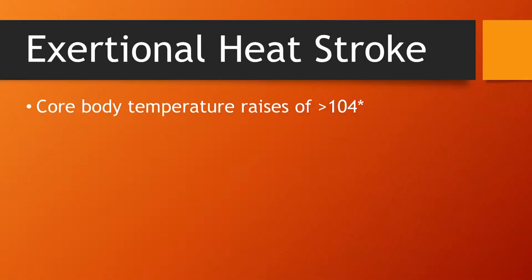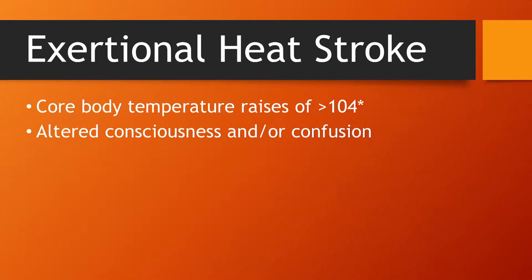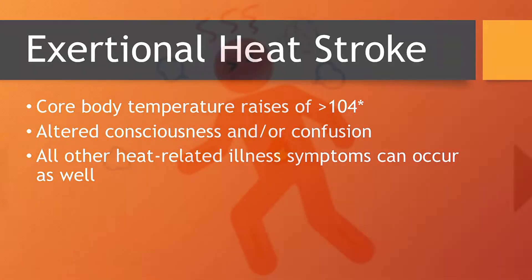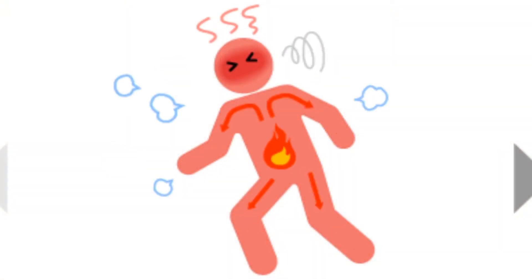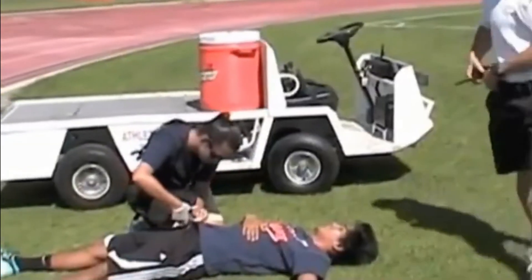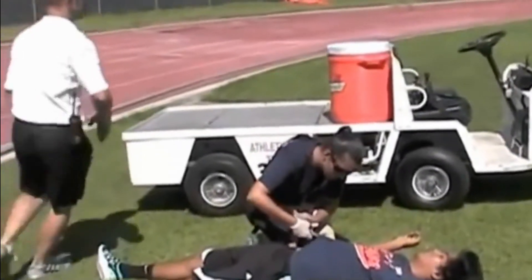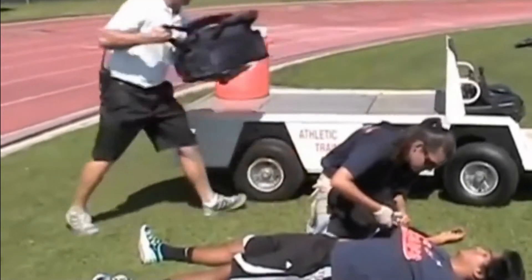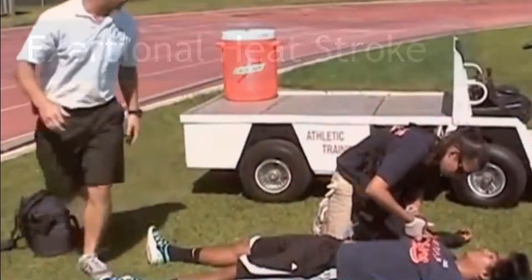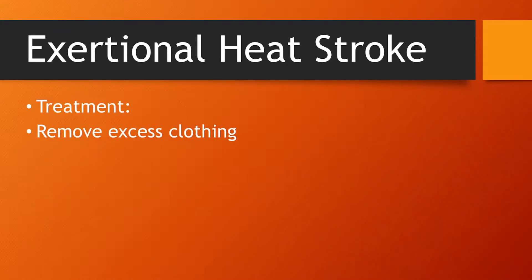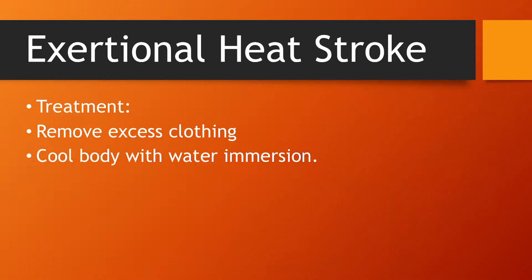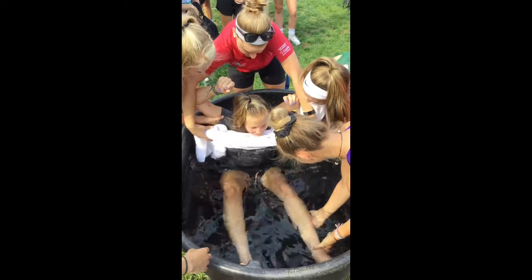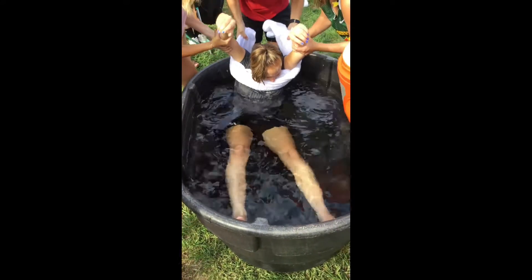Exertional heat stroke can be fatal if not treated quickly and properly. It occurs when the body's internal temperature rises to a point where the body can no longer effectively cool itself, leading to organ shutdown and eventually death. The two main criteria for diagnosing exertional heat stroke are rectal temperature above 104 degrees and central nervous system dysfunction. Immediately remove the person from the field and remove all equipment and excess clothing. Cool the person as quickly as possible within 30 minutes — ideally using whole body immersion in a tub or tank filled with water and ice, constantly stirred.